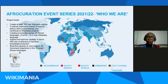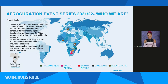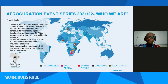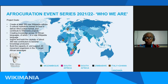For 2021 and 2022, we had an Afro-Curation event series — five events — on the theme of 'Who We Are.' The goals were to create at least 300 new Wikipedia articles involving five cultural institutions, including museums, galleries, publishing houses, and tertiary institutions. We also wanted to create knowledge across 10 African languages, with one being a new language added to Wikipedia, and to inspire and build the capacity of about 300 new contributors to become knowledge producers, as well as support 20 movement organizers in the 10 targeted African languages.